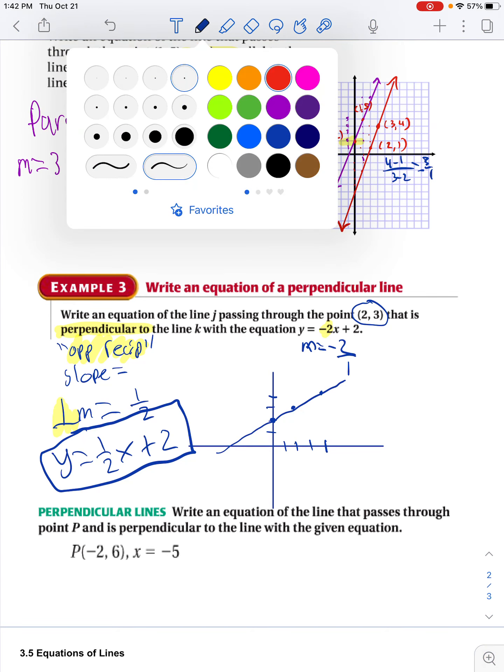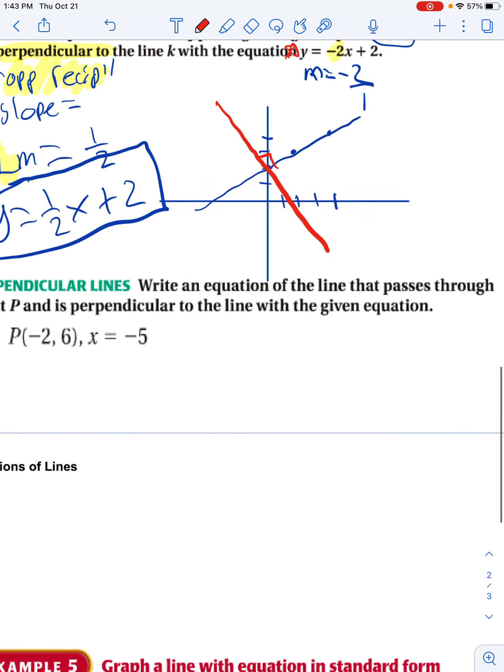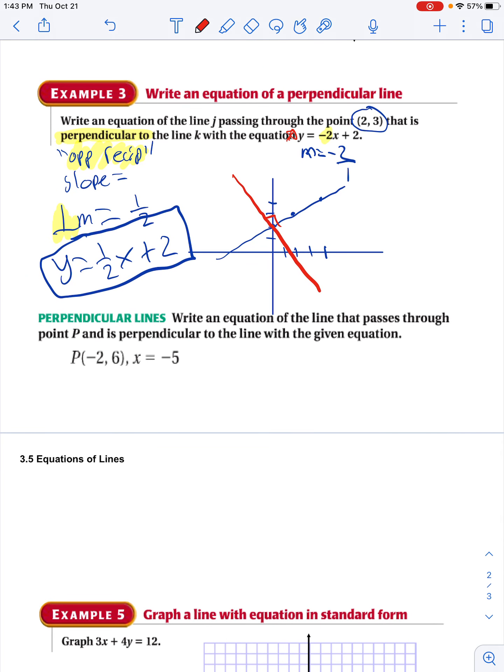So, again, this is like my new line that I just created. My original line, this line right here, would be something like this. Oh, that's not very. It would be something like this, which would create a 90-degree angle. So we want to pass through P and it's perpendicular to the line with the given equation.